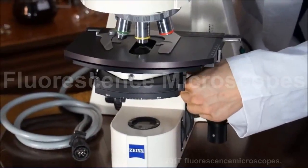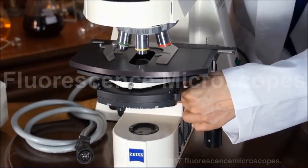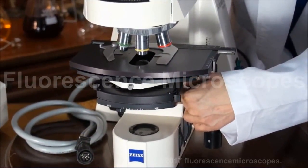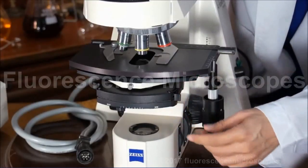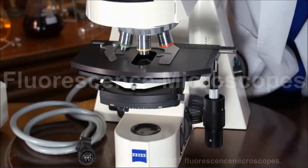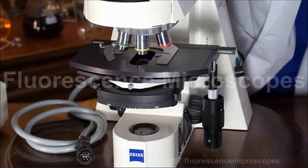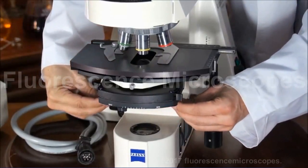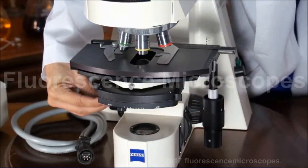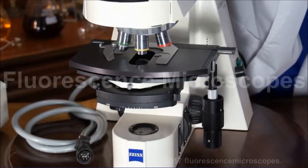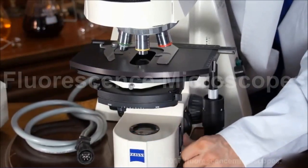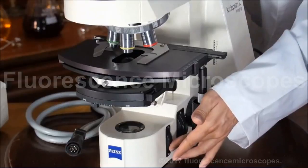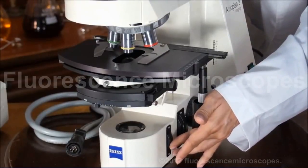Raise and lower this condenser so that it's at the precise location where the luminous field diaphragm is in focus, and at the same time center that luminous field diaphragm. Then open the diaphragm back up just so it's a little bit outside of the field of view.